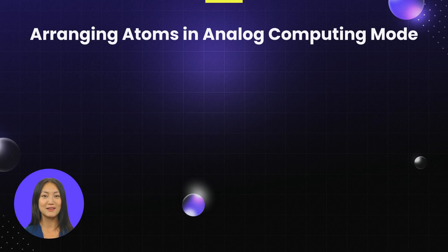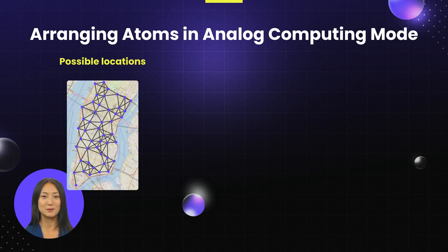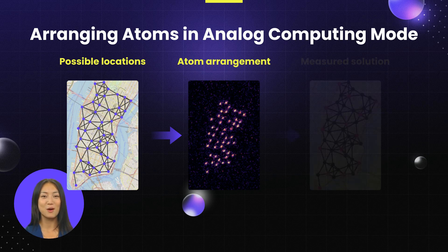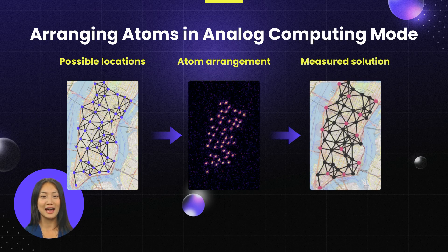In analog computing mode, arranging the atoms before the computation helps to efficiently encode problems with a geometric component. In this example, the optimal choice of coffee shop locations is determined using this technique. Atoms are moved to coordinates that represent candidate locations. The quantum program runs and an optimal solution is found.